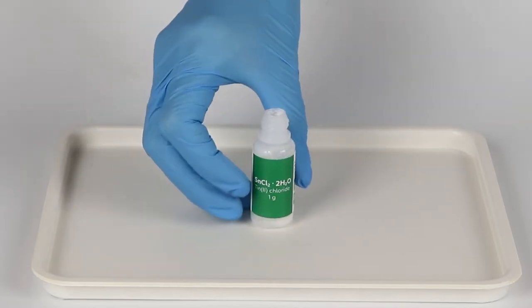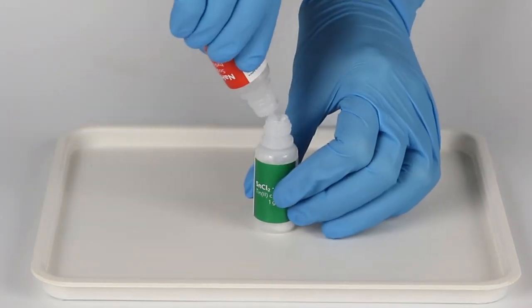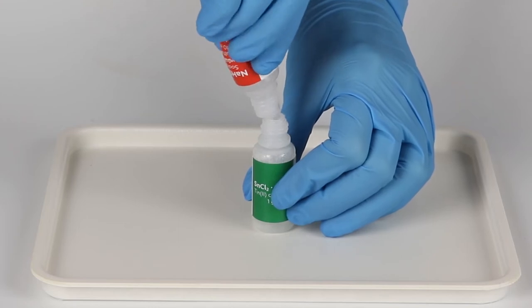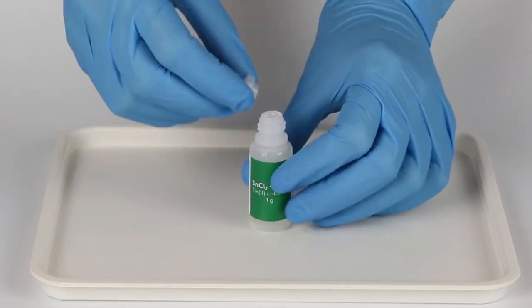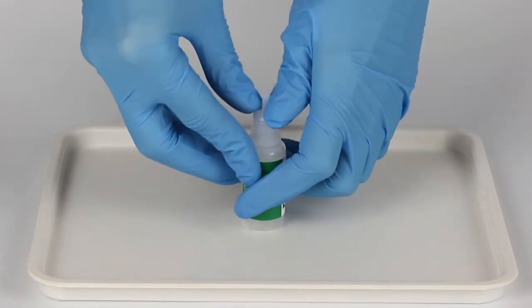Open the bottle of Tin Chloride and pour one bottle of Sodium Hydrogen Sulfate Solution into it. Securely insert the tip and close the bottle using the red cap.